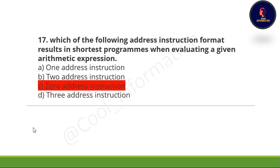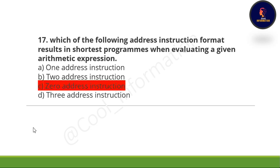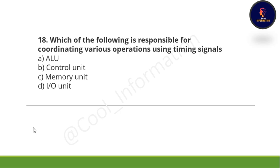Seventeenth question: Which address instruction format results in the shortest programs in a given arithmetic application? Option A, one address instruction; option B, two address instruction; option C, zero address instruction; option D, three address instruction. The correct option is option C, which is zero address instruction.